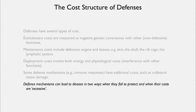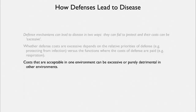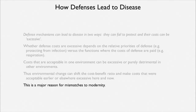There are two ways that defense mechanisms can lead to disease: either they fail to protect and just break down, or their costs are excessive. Whether costs are excessive depends on the priorities of defense — for example, protecting from infection versus the cost of defense, and what functions are being served, such as respiration. A cost that is acceptable in one environment could be completely detrimental in another. The environmental change that occurs can shift the cost-benefit ratio. So something that evolved in the past where the cost-benefit ratio was favorable may produce what we call a mismatch to modernity when that ratio shifts in the present.